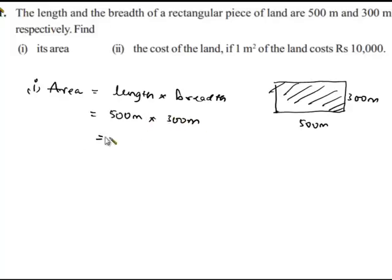So that is equal to 5 times 3 is 15, and we are left with four zeros, and meter into meter is meter squared. So finally, we can say that the area of the given rectangular piece of land is 150,000 meters squared.